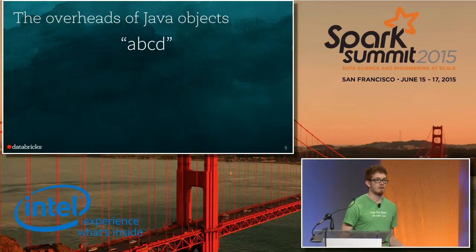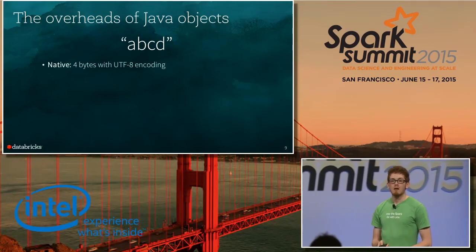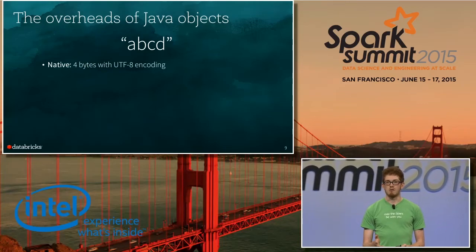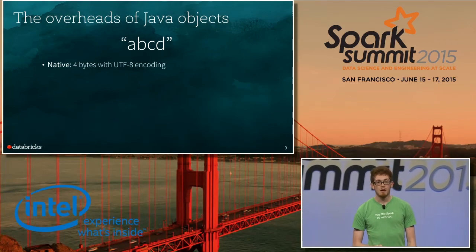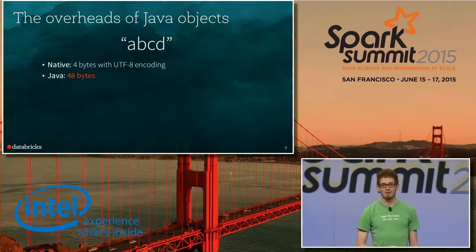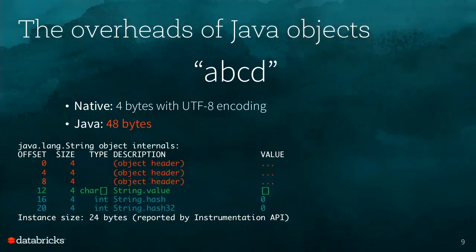Here's an example of a Java object — a Java string 'ABCD.' A native encoding might only require four bytes; I can encode it in UTF-8 with four ASCII characters taking one byte each. But the same string in Java takes 48 bytes, which is kind of crazy. That breaks down as a Java object header tracking metadata, space for the hash code, and an array of characters where each character is two bytes, and the character array itself also has a hash code and header. So this is an enormous overhead.